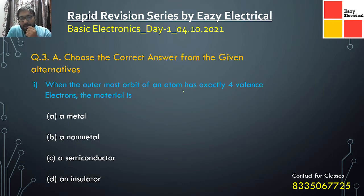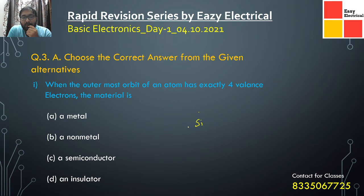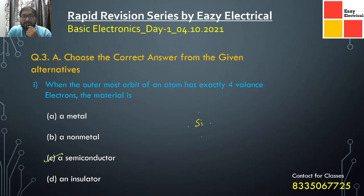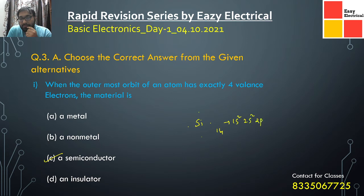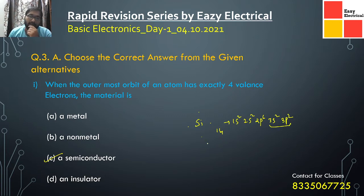When the outermost orbit of an atom has exactly four valence electrons, the material is a semiconductor. Silicon, for example, has atomic number 14, with electron configuration 1s2 2s2 2p6 3s2 3p2 — giving four electrons in the third orbit. Similarly, germanium also has four outermost electrons. So if the outermost orbit contains four electrons, we call it a semiconductor.